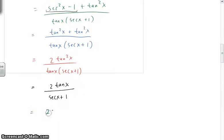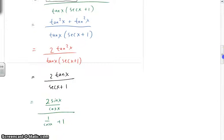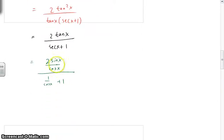This is 2 sine x over cosine x over 1 over cosine x plus 1. Now let's clear that fraction out by multiplying by cosine x over cosine x. So that's 2 sine x. And this is 1 plus cosine x.